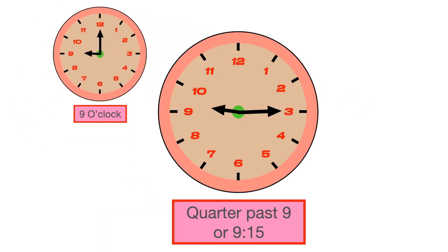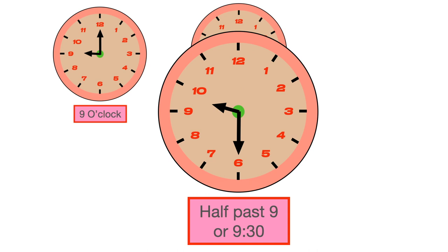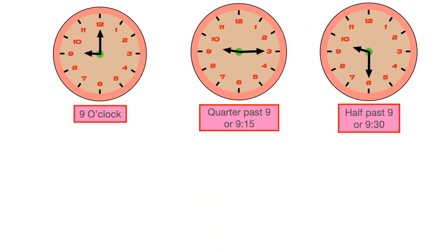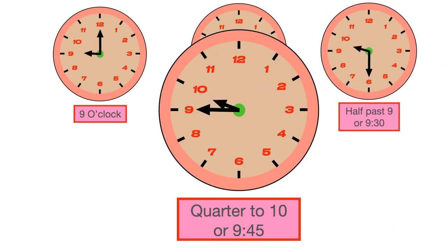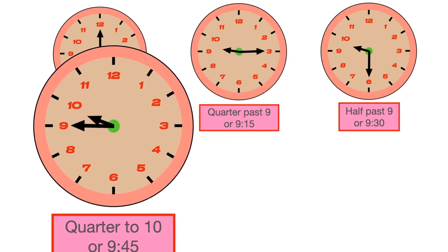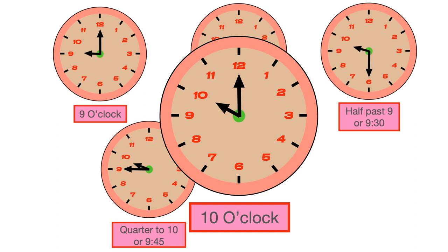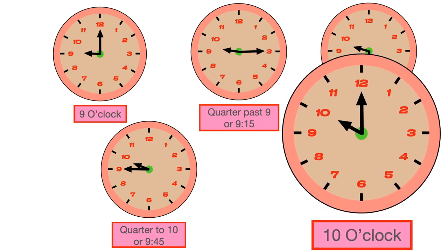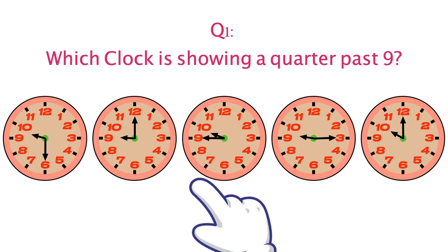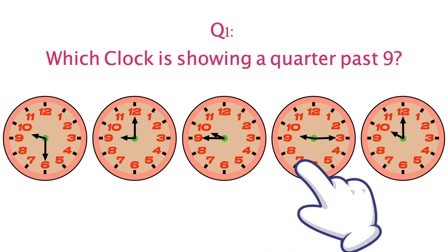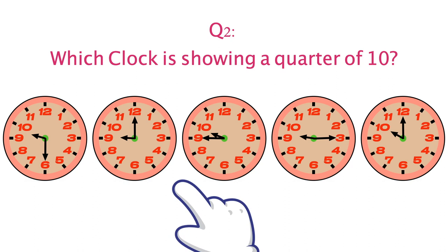Let's practice more. It's nine o'clock. It's a quarter past nine, or nine hours and 15 minutes. It's half past nine, or 9:30. It's a quarter to ten, or 9:45. Which clock is showing a quarter past nine? Which clock is showing a quarter to ten?